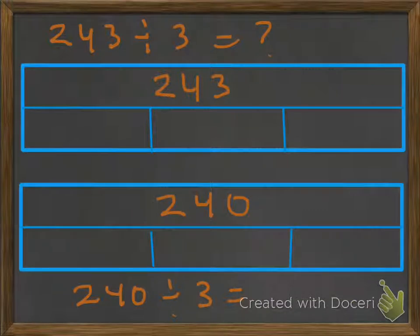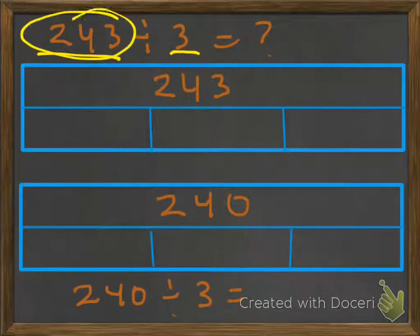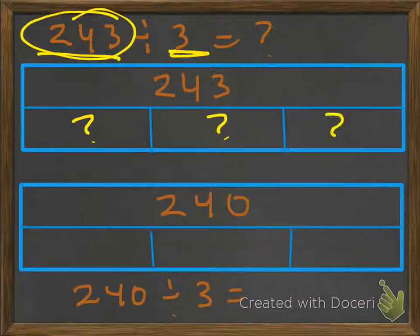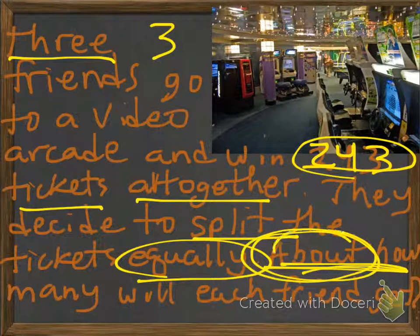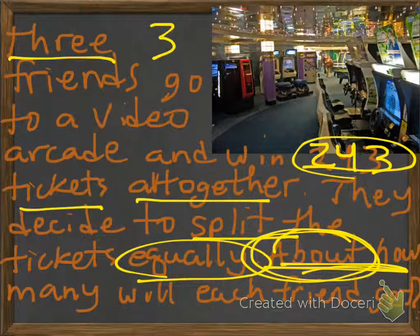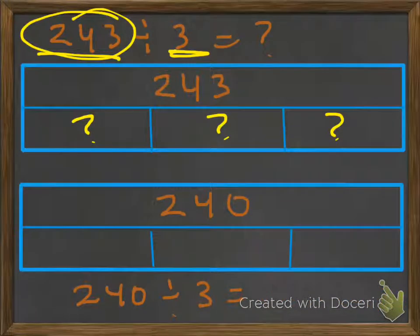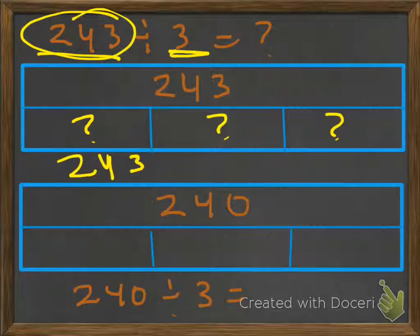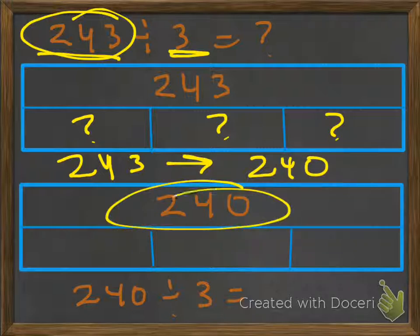So we have 243 divided by 3, because they started with that number, they want to split it equally, and so that becomes a big question mark. What does each friend get? Well, since they asked us to say about, and there's the key word right there, about how many will each friend get, we don't actually have to solve the problem precisely. We can actually estimate. So really, 243 is rounded to 240, and that's where we get this number.